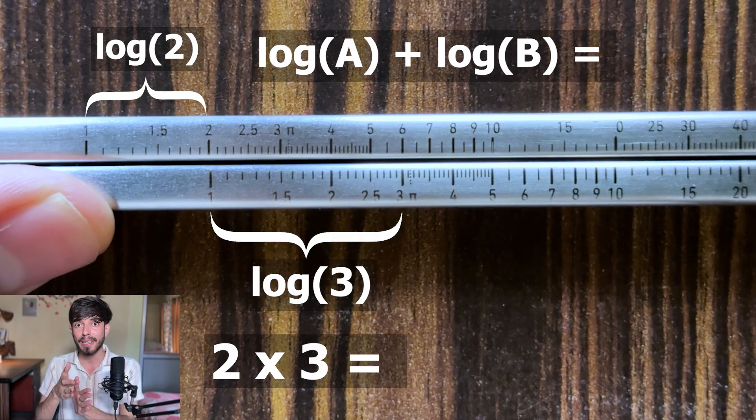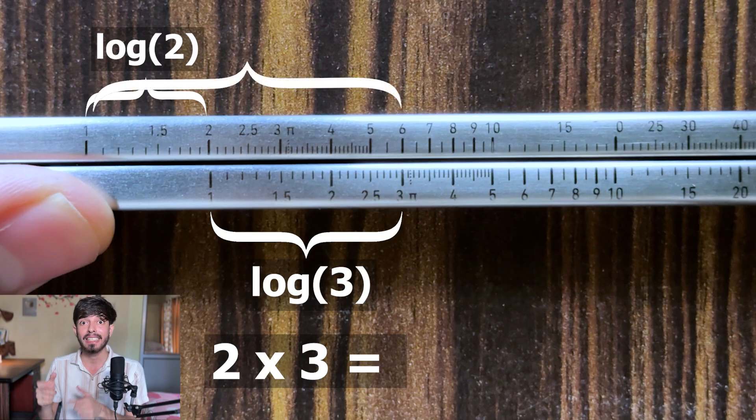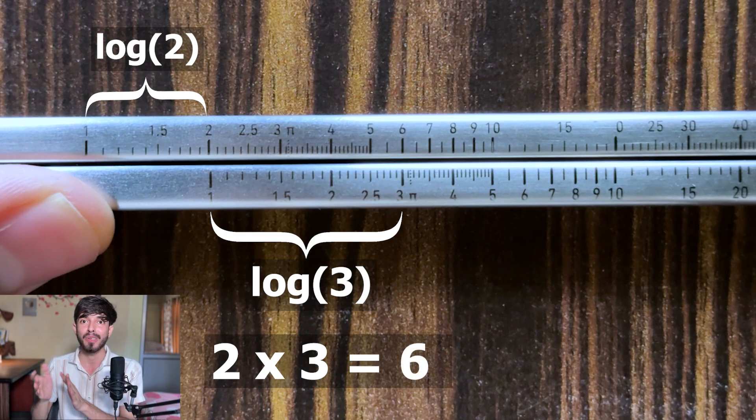So this length log of 2 plus this length log of 3 is equal to... Can you tell me what is log of a plus log of b? It is equal to log of a into b. So this length basically is log of a into b. So this number is a into b which is 6. So this is how you multiply two numbers.